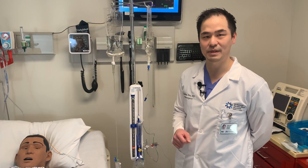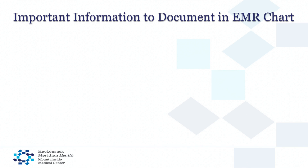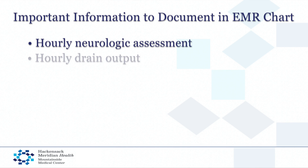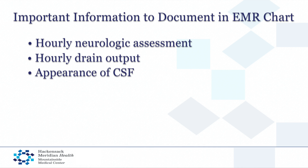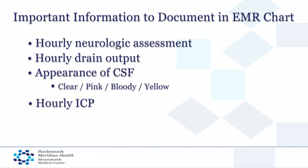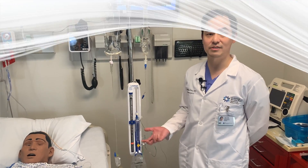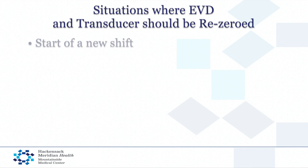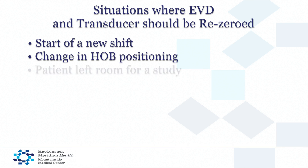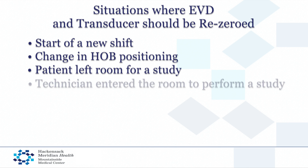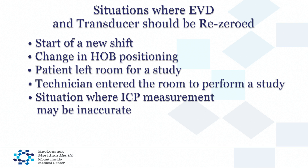Important pieces of information that should be entered into the patient's record include their hourly neurologic assessments, the output of the drain every hour, and the appearance of the cerebrospinal fluid every hour — which can range from clear, pink-tinged, bloody, or yellow. It's also important to measure and record the intracranial pressure every hour. The drain and transducer should be re-zeroed at the start of every shift, whenever the patient leaves the room for a study or procedure, if a technician enters the room to perform a study, or in any situation where you feel the intracranial pressure reading is inaccurate.